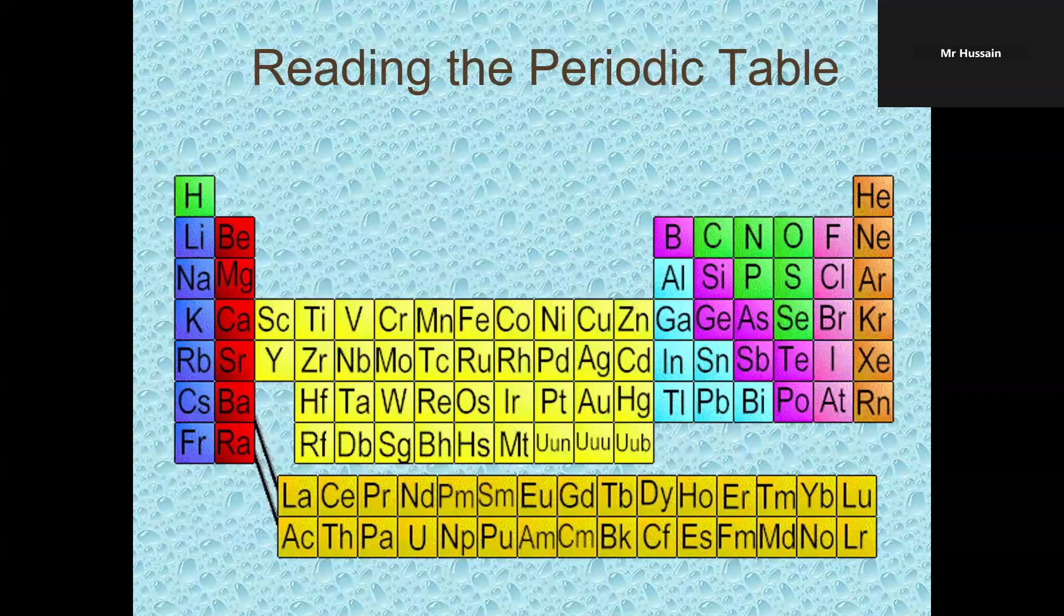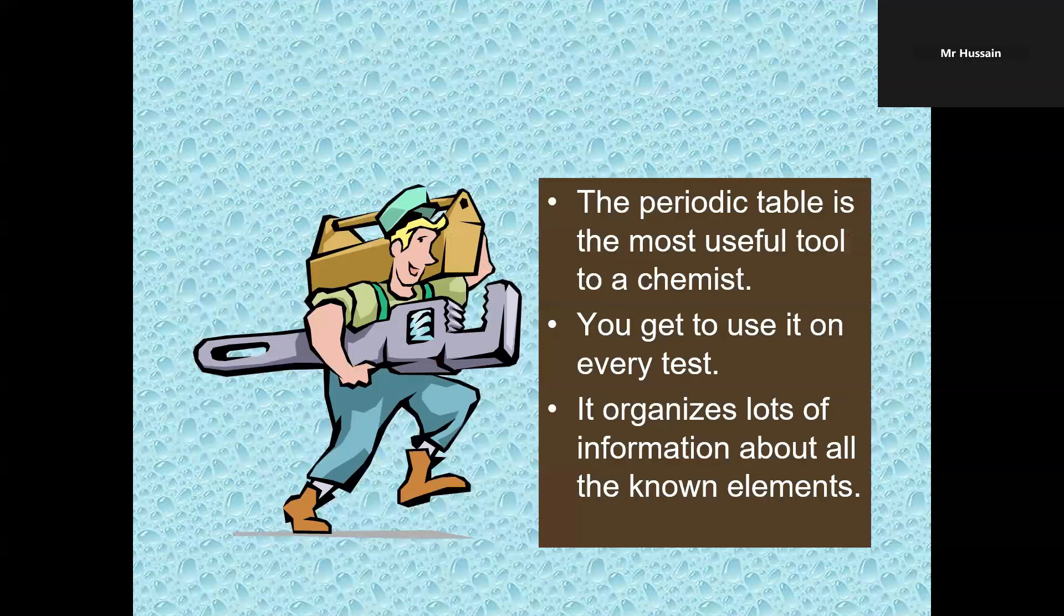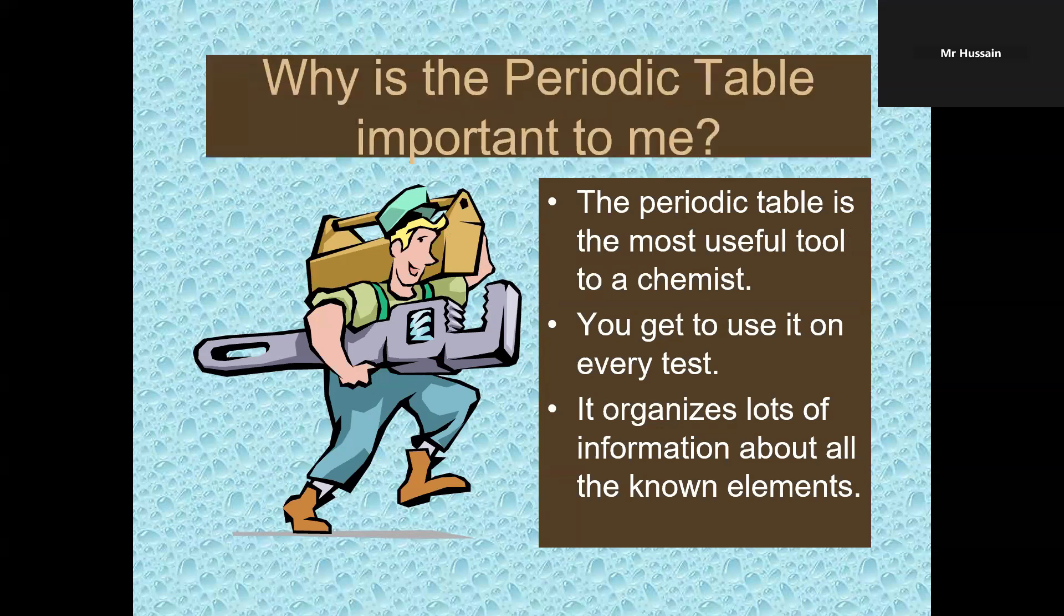This is the periodic table. The periodic table is the most useful tool to a chemist because you get to use it on every test. It organizes lots of information about all the known elements.